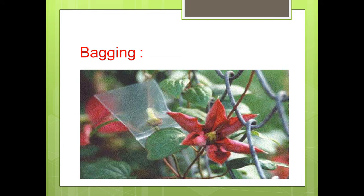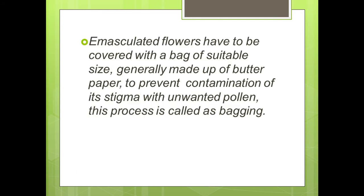The next step is bagging. Once the anther is removed, the next step is to protect the female part of the flower from unwanted pollen grains. This is achieved through a technique called bagging, where emasculated flowers are covered with a bag of suitable size, generally made of butter paper, to prevent contamination of the stigma with unwanted pollens.